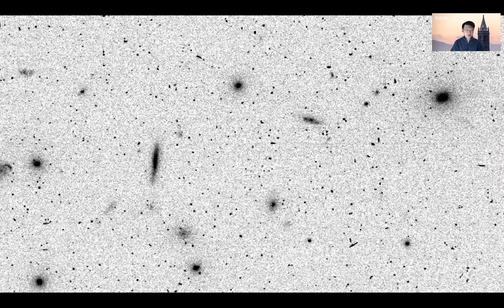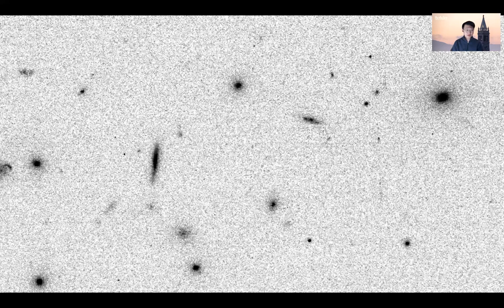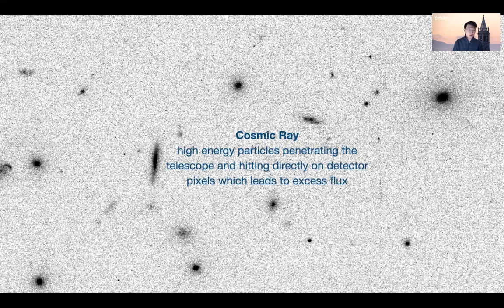To start with, here's an image of a galaxy cluster taken by Hubble. You can see that apart from these fluffy-looking galaxies, you also have a whole bunch of little dots. Those are not stars — those are actually cosmic rays. This is the same image with the cosmic rays removed, much cleaner. So this is cosmic ray rejection. Cosmic rays are high-energy particles that penetrate the telescope and hit the detector directly, which leads to excess flux. The problem is a lot more severe in space because of Earth's radiation belt, which contains a lot of charged energy particles, creating a lot of trouble for Hubble.